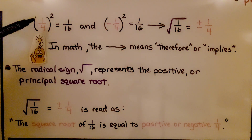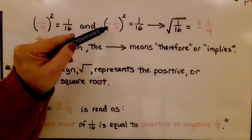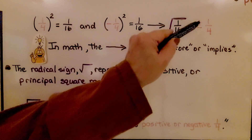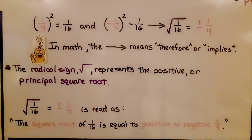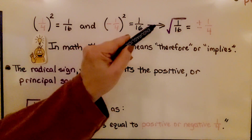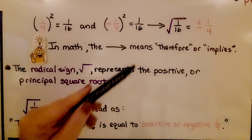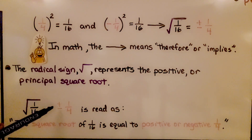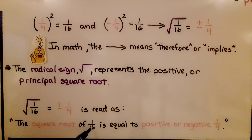Here we have 1/4 squared. That means 1/4 times 1/4 is equal to 1/16, and negative 1/4 squared is equal to positive 1/16. Therefore, the square root of 1/16 is positive or negative 1/4. In math, an arrow pointing to the right means 'therefore' or 'implies.' The radical sign represents the positive or principal square root. The square root of 1/16 is equal to positive or negative 1/4.